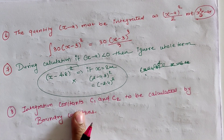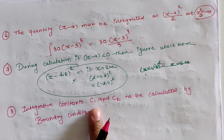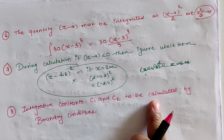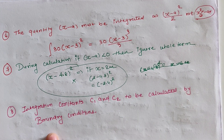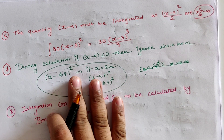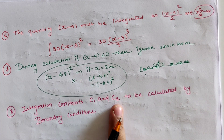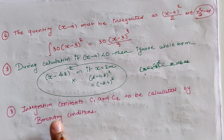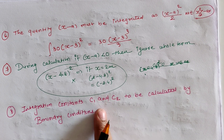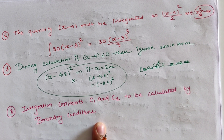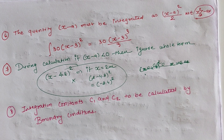The eighth assumption is that the equation constants C1 and C2 in Macaulay's method are to be calculated using the boundary conditions. These are the total assumptions made in Macaulay's method. Let us now discuss the boundary conditions for different types of beams.